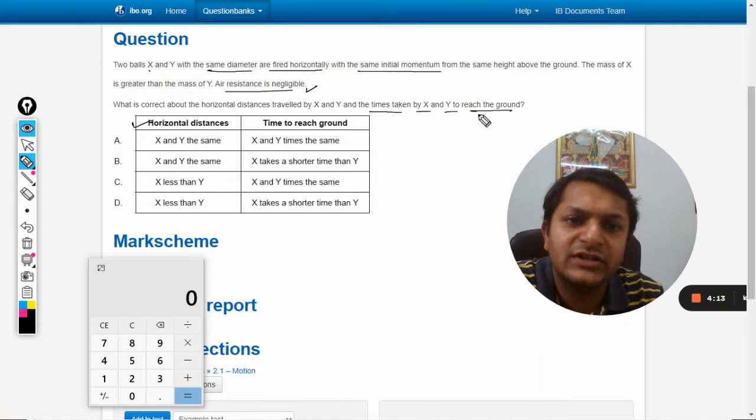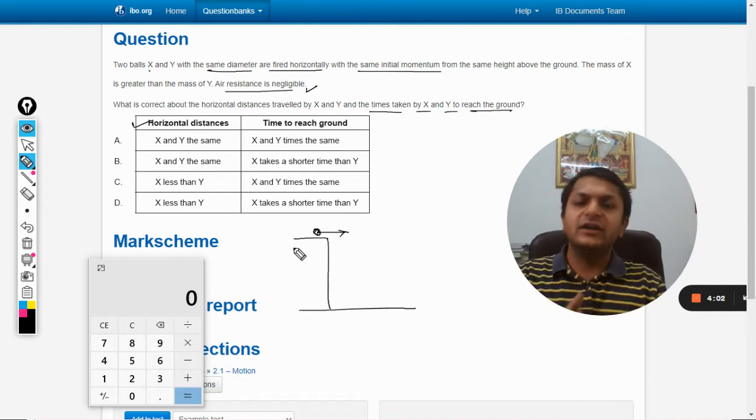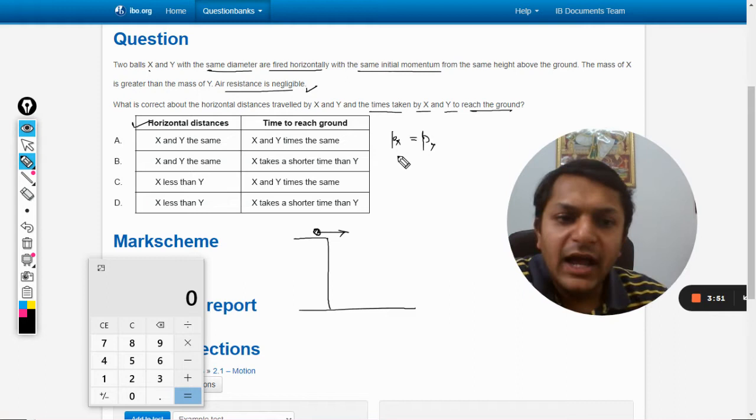Let us first make the diagram here. Let us say this is the building from which two balls have been kicked and they have been kicked in a horizontal manner. So let us see what are their velocities.